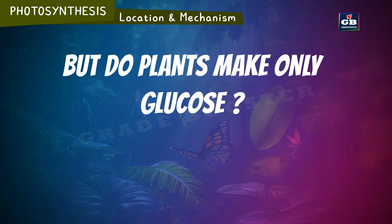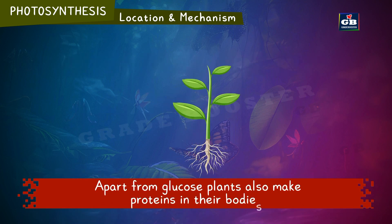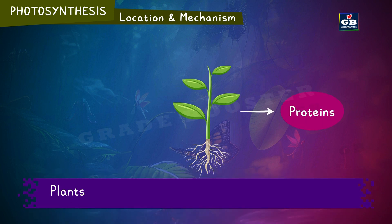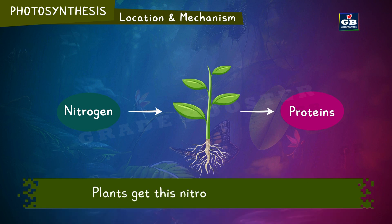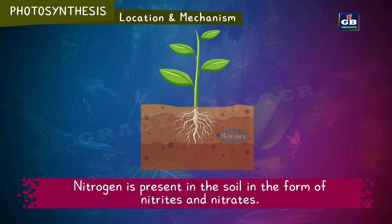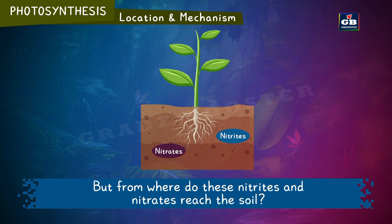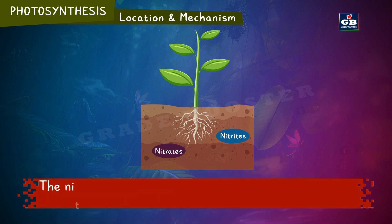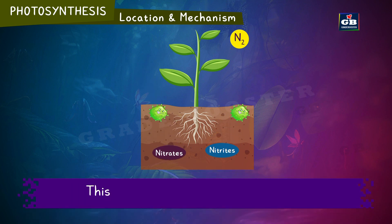Apart from glucose, plants also make proteins in their bodies. Plants need nitrogen to make new protein molecules, and they get this nitrogen from the soil. Nitrogen is present in the soil in the form of nitrites and nitrates. The nitrogen-fixing bacteria present in the soil converts the atmospheric nitrogen into nitrites and nitrates. This is all about nutrition in plants.